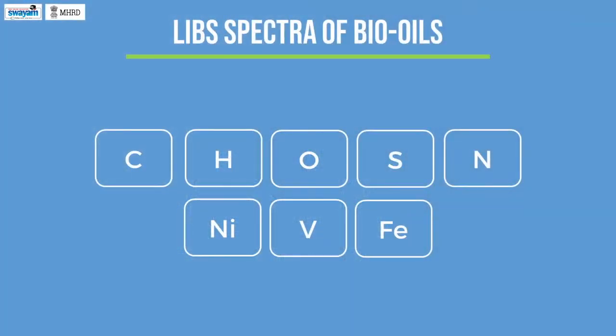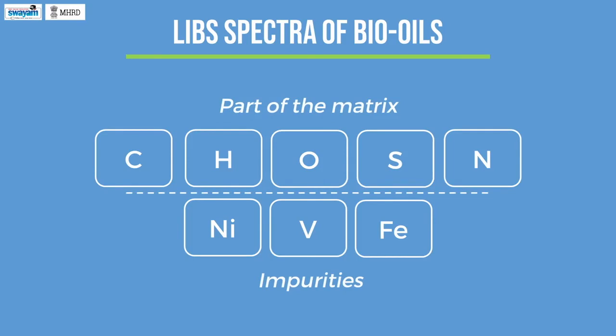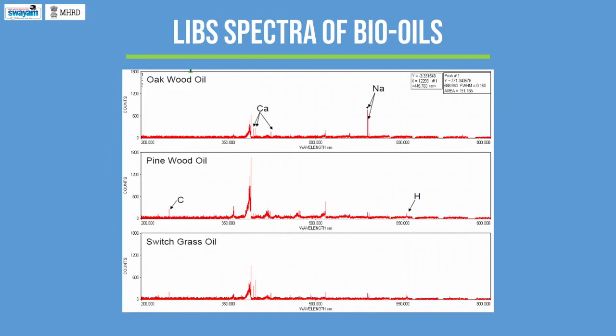LIBS spectra of bio-oils: Elemental analysis of crude oil is performed to determine the presence and content of various elements such as carbon, hydrogen, oxygen, sulfur, nitrogen, nickel, vanadium, and iron. Carbon, hydrogen, oxygen, sulfur, and nitrogen are integral parts of the matrix, while others are considered impurities. By measuring the LIBS spectrum, one can conclude the quality of the crude oil. This is a LIBS spectra of oak, pine, and switchgrass oils. By looking at the spectra, we can determine what is present and what is not present in a given bio-oil.